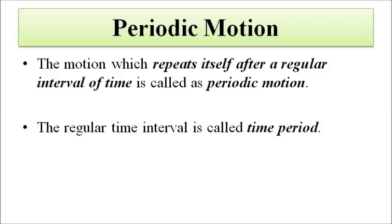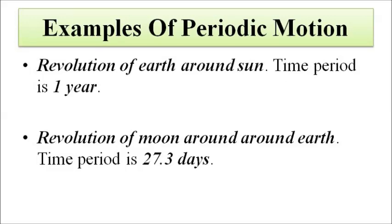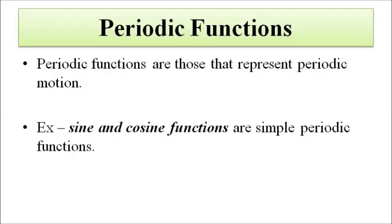Examples of periodic motion include the revolution of the Earth around the Sun and the revolution of the Moon around the Earth, with time periods of one year and 27.3 days respectively.